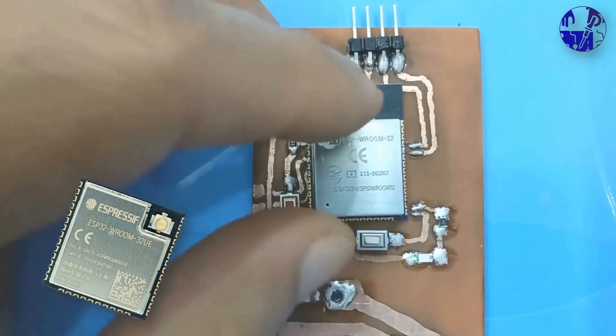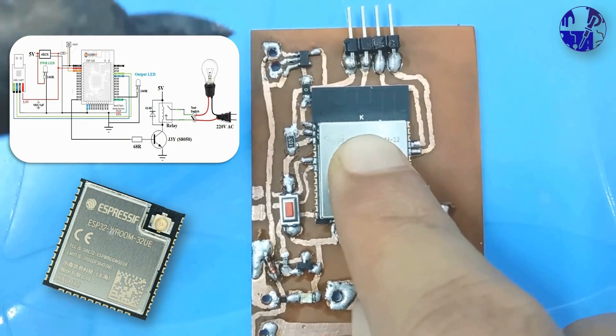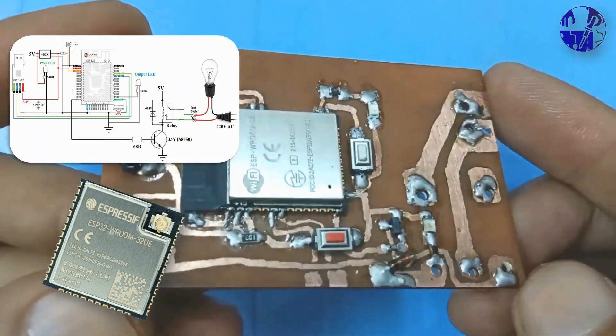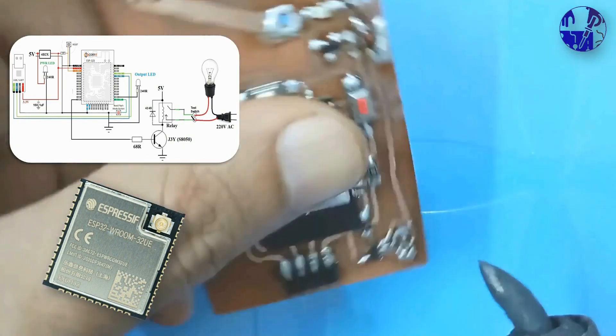At the core of our hardware is the ESP32 Wi-Fi Bluetooth chip. It is a versatile microcontroller that combines Wi-Fi, Bluetooth, and Arduino support in a single chip.